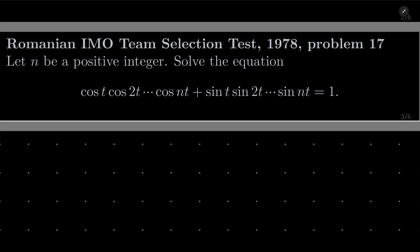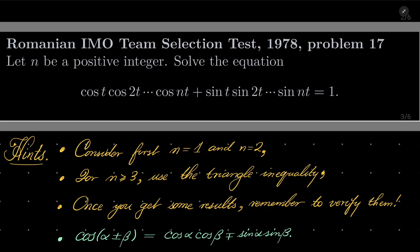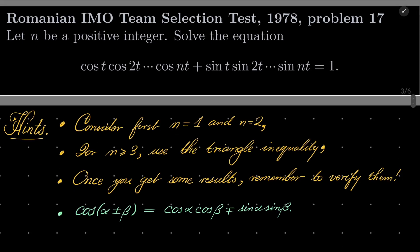It's a nice trigonometric equation, and here are my hints. First, consider separately the cases where n equals 1 and n equals 2. For n greater than or equal to 3, use the triangle inequality, and also notice that both sine and cosine are bounded between minus 1 and 1. Once you get some results, remember to verify them. Crucially, the cosine addition identity will be immensely helpful: cosine of alpha plus or minus beta equals cosine alpha cosine beta minus or plus sine alpha sine beta. Give this problem a try and I will see you in just a minute.